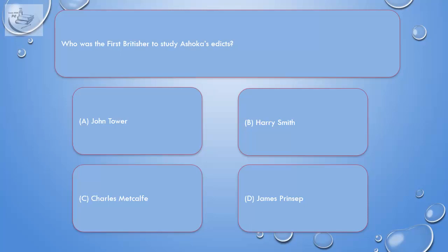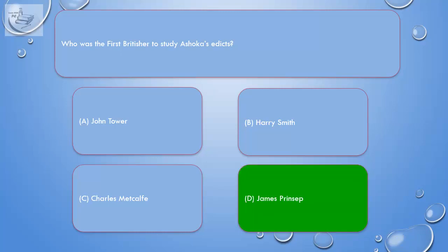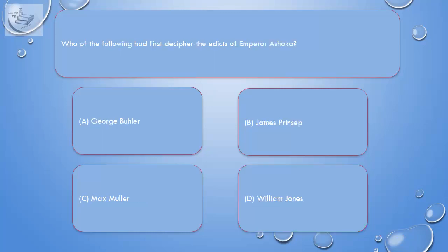Question: Who was the first Britisher to study Ashoka's edicts? A. John Tower, B. Harry Smith, C. Charles Metcalf, D. James Princep. Correct answer is D. James Princep.